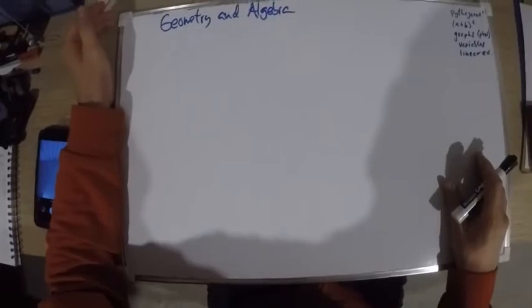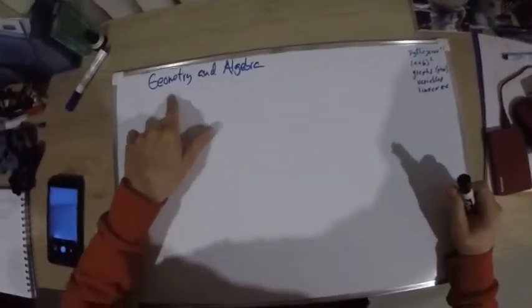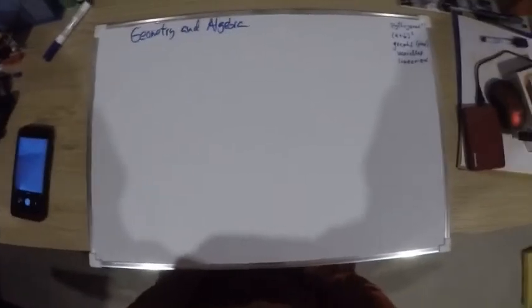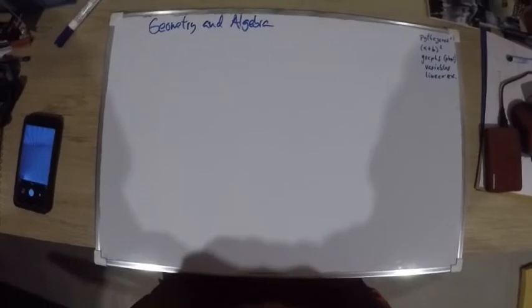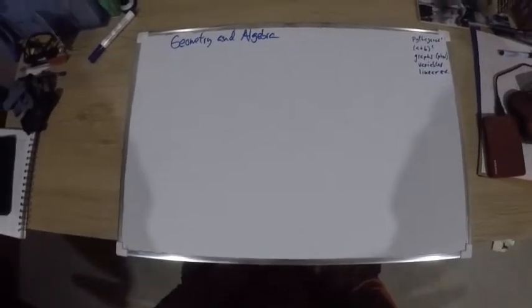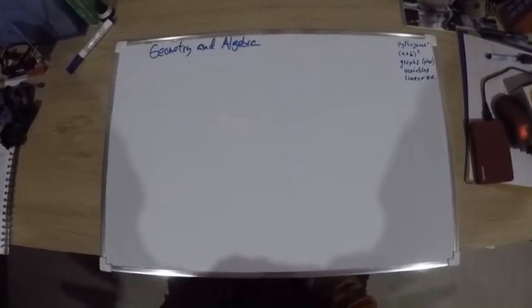In this video we're going to talk about the relationship between geometry and algebra. So far this year we've been doing lots of algebra — dealing with polynomials, how to operate them, how to multiply them, how to factor them, how to solve certain types of equations that involve polynomials. But I think it's important that we see how all those things are related with geometry.